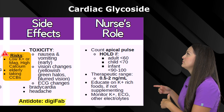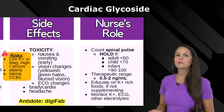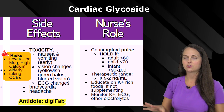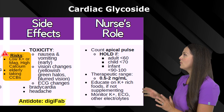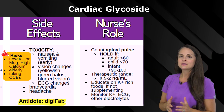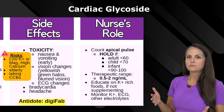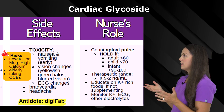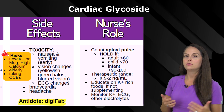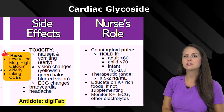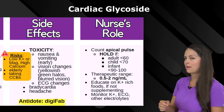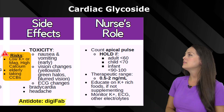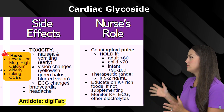Moving on to the nurse's role: the big thing you want to do is count that apical pulse before you administer every dose of digoxin. Follow your hospital's guidelines and protocols on the ranges for when to administer. Typically for an adult, you will hold the medication if the heart rate is less than 60. For a child, less than 70, and for an infant, less than 90 to 100.